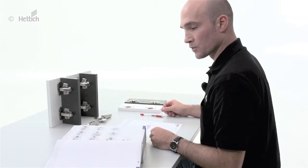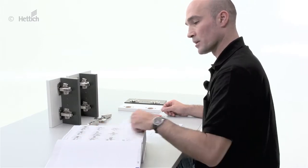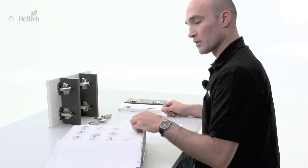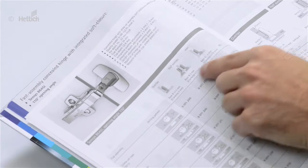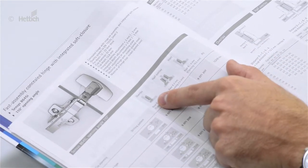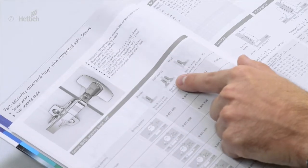In this step we want to demonstrate how to calculate a standard full overlay application. Therefore we go to the catalog page and we see there are two different types of overlay applications: full overlay and half overlay application.